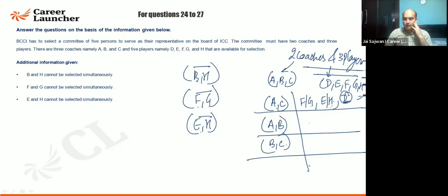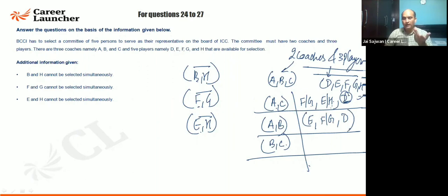Now for coaches AB: since B is selected, H cannot come. So E is certainly going to come. Out of F and G, one will come, and D is certainly going to come. So there are only two combinations here.